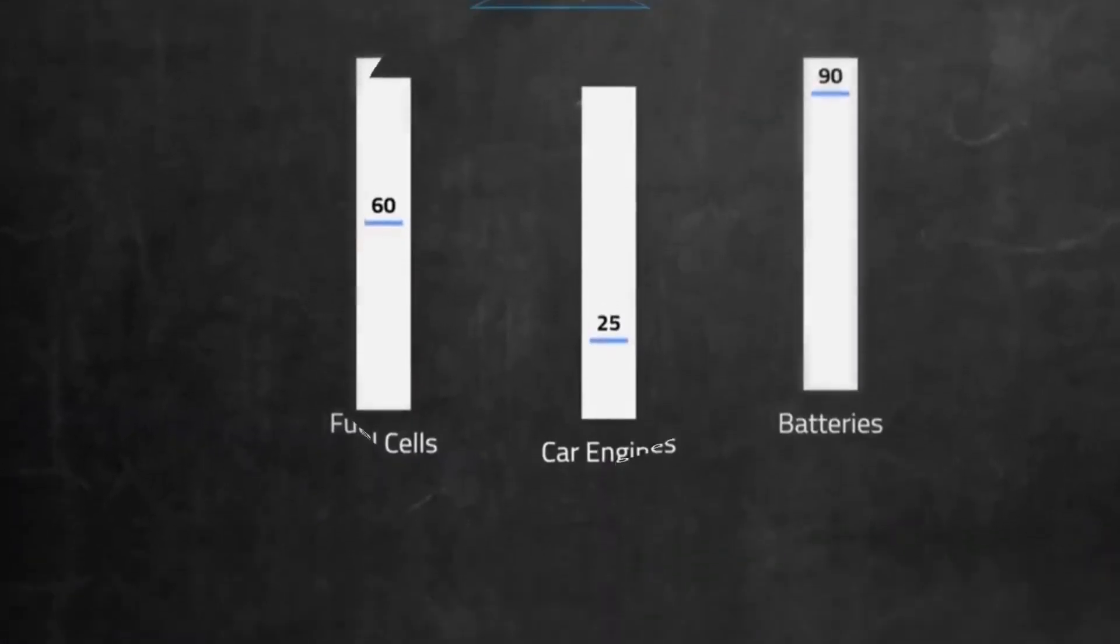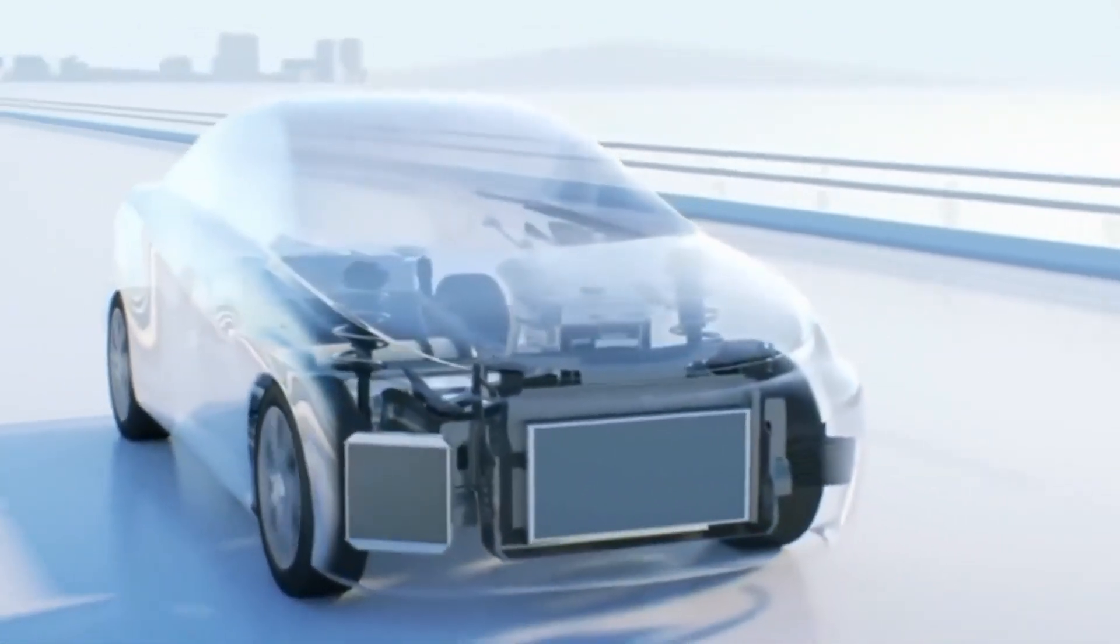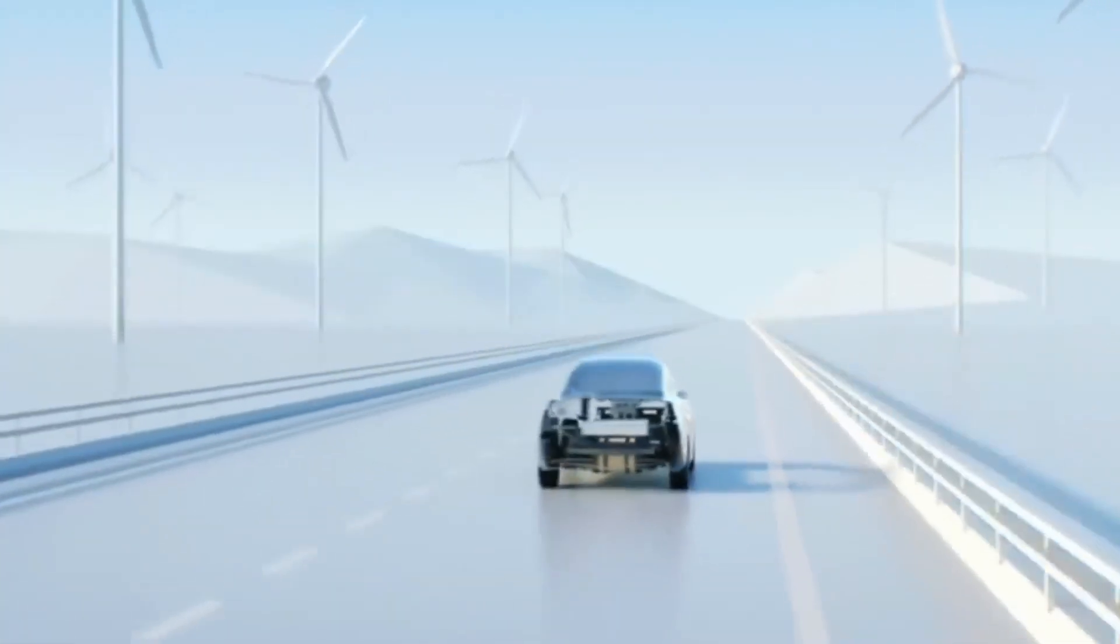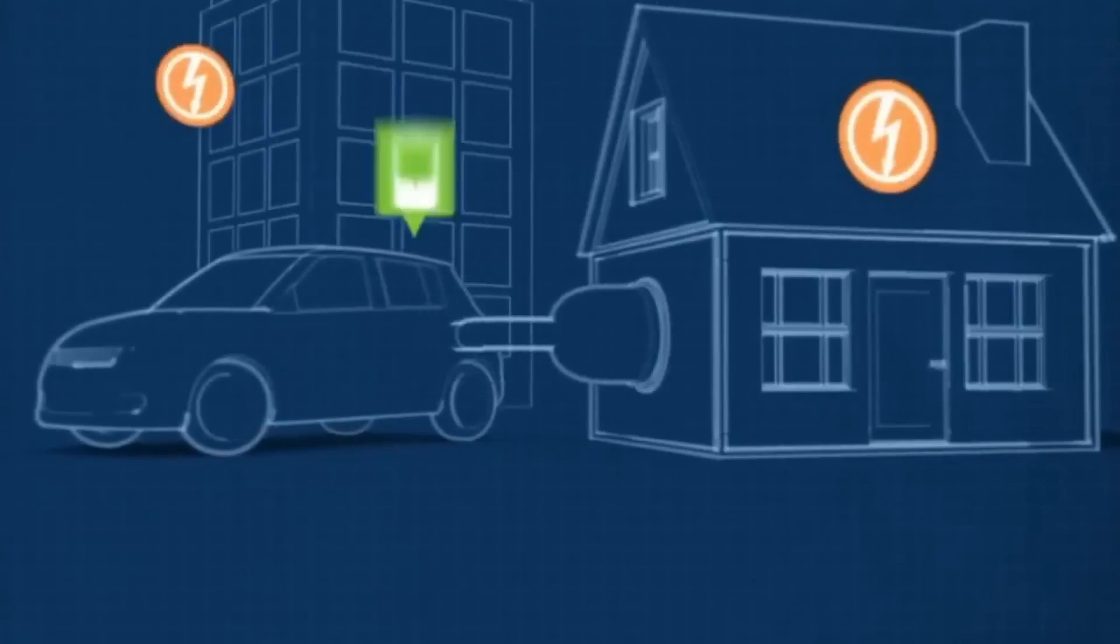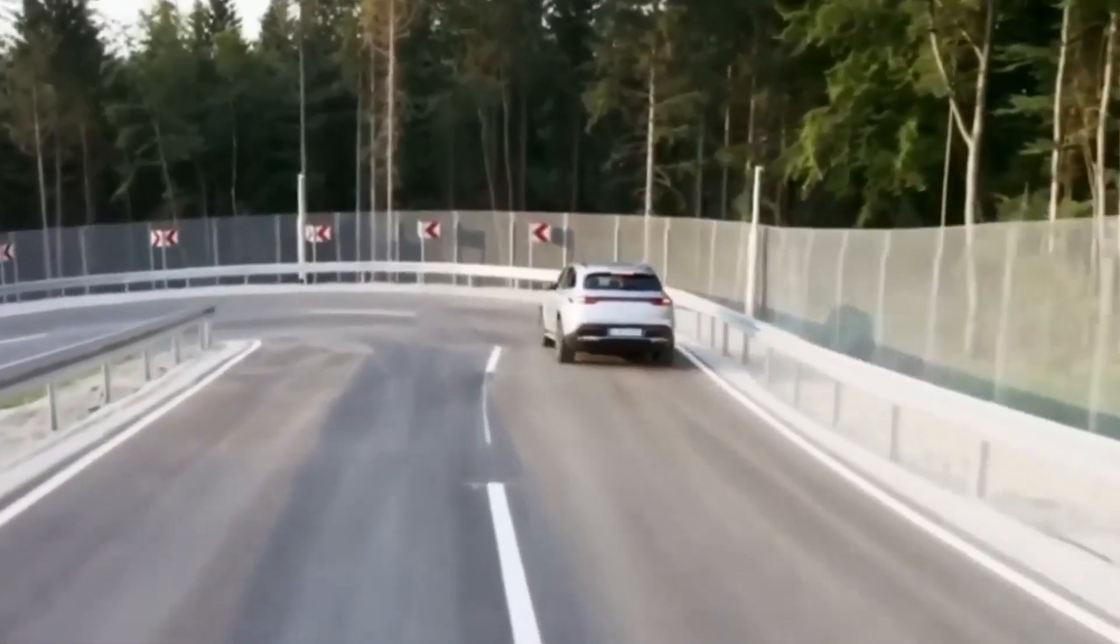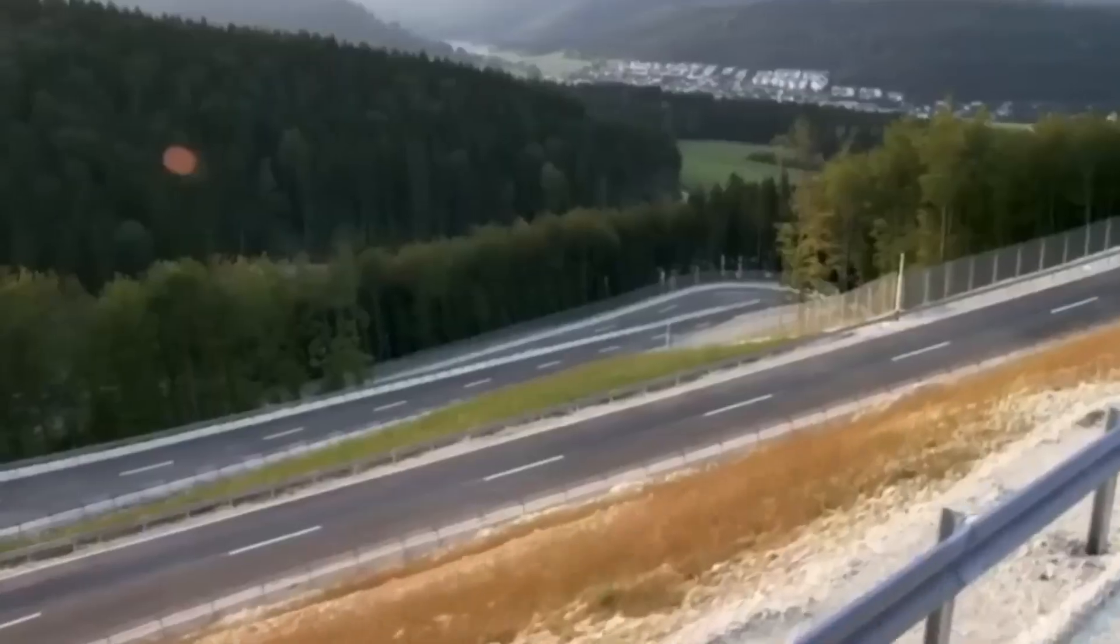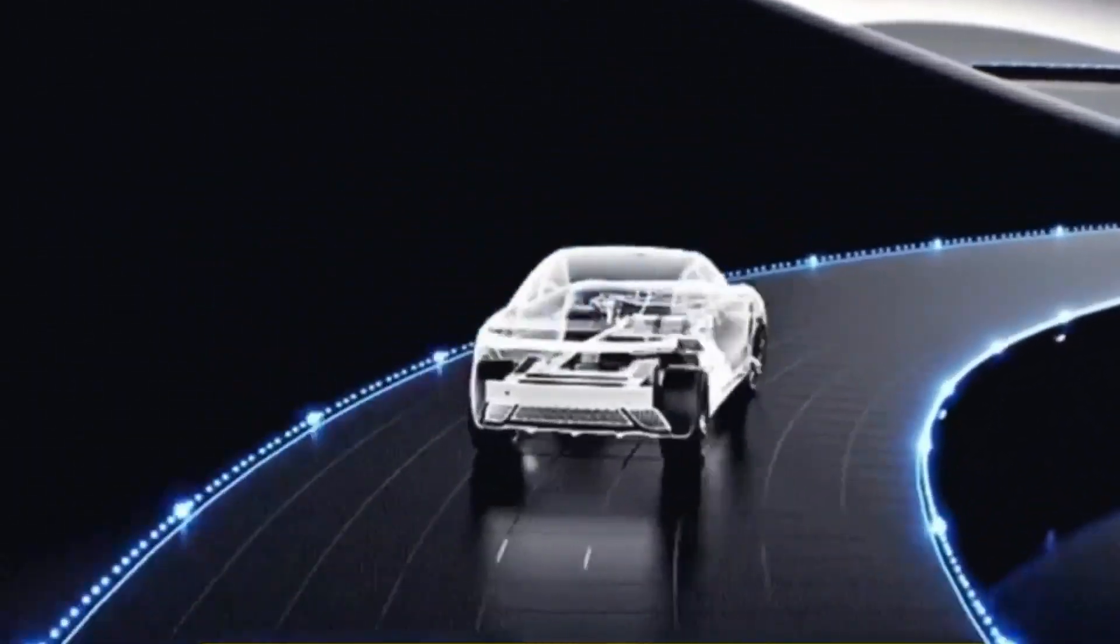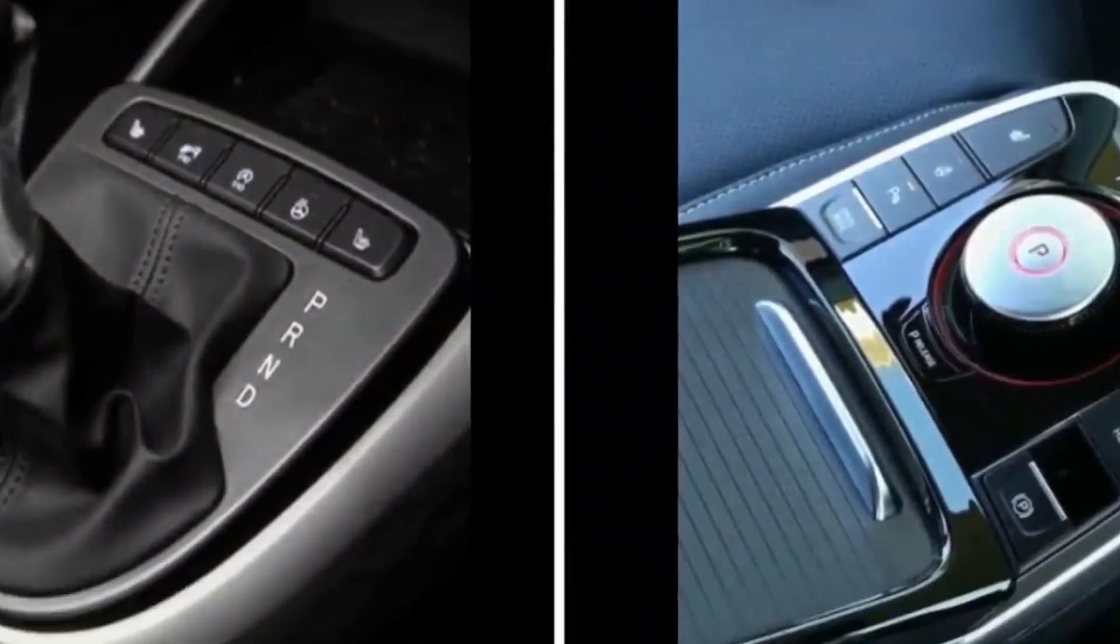On the flip side, electric cars function as master orchestrators of internal processes, driven by lithium-ion batteries that supply power to electric motors. These batteries recharge by plugging into the electricity grid, akin to other electronic devices. Some electric cars even harness energy during braking, converting heat into electricity for a small recharge. The core power source for electric vehicles lies in the rechargeable battery. As we weigh the merits of hydrogen and electric cars, it's crucial to analyze critical characteristics.